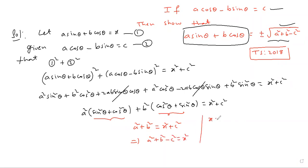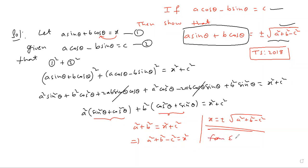Then what is x? x equals plus or minus under root of a square plus b square minus c square. Since x was our assumption for a sin theta plus b cos theta, from equation 1 we can clearly write: a sin theta plus b cos theta is equal to plus or minus under root a square plus b square minus c square.